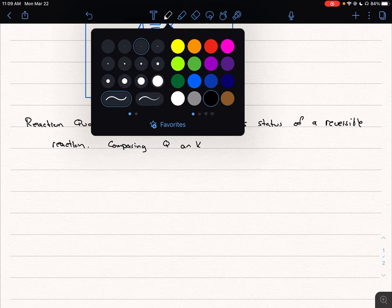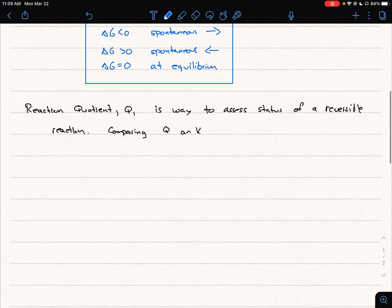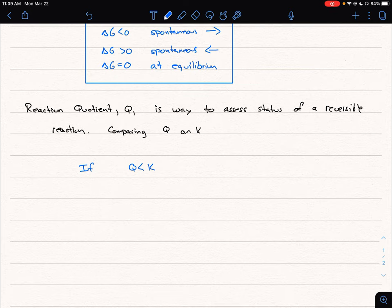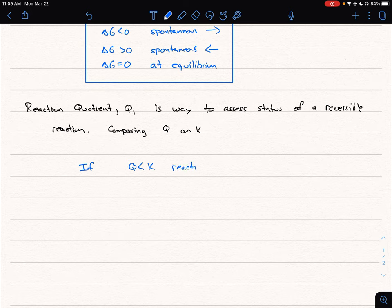And we can make a similar box that we made before and say, if Q is less than K, then we know the reaction goes to the right.